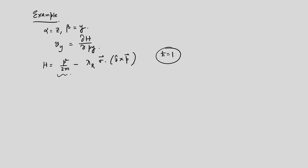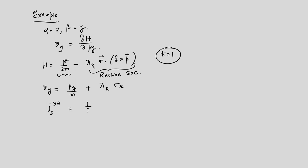Calculating v_y equals del H / del p_y gives v_y equals p_y/m plus lambda_R sigma_x, because sigma dot (z-hat cross p) equals sigma_x p_y minus sigma_y p_x. The derivative with respect to p_y of the other term gives zero. This tells you that the spin current component J^{zy}_s equals (1/2m) times sigma_z p_y. This is quite an important step: the spin current is written in terms of the Pauli matrix and the y-component of momentum.